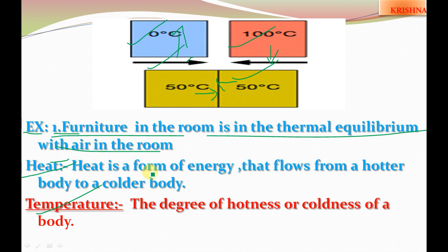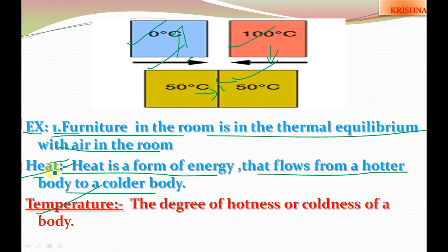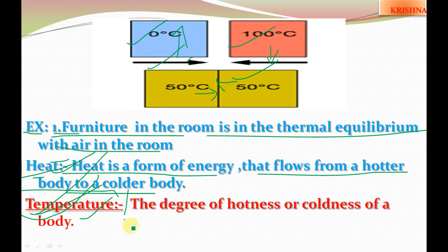Heat is a form of energy that flows from a hotter body to a colder body. From this concept, we introduce another quantity: temperature. How much hotter or colder can you express with the physical quantity temperature. Temperature is the degree of hotness or coldness of a body.